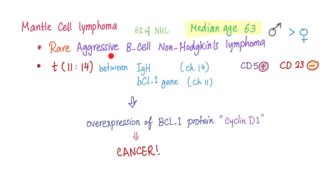Mantle cell lymphoma is a rare, aggressive, B-cell non-Hodgkin's lymphoma. Median age is 63, and males are more commonly affected than females, as is the case with most lymphomas. There is a translocation between chromosomes 11 and 14 — between the immunoglobulin heavy chain on chromosome 14 and the BCL1 gene on chromosome 11. This translocation leads to overexpression of the BCL1 protein, also known as cyclin D1, driving proliferation and cancer.